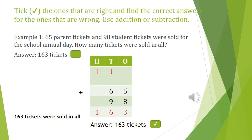Let's read. Tick the ones that are right and find the correct answers for the ones that are wrong. Use addition or subtraction. Example 1: 65 parent tickets and 98 student tickets were sold for the school annual day. How many tickets were sold in all?